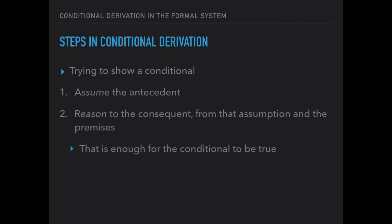And if we can do that — if we can reason from the antecedent to the consequent — then we know that if the premises are true, then so is the conclusion. In particular, so is this conditional. If the premises are true and we can reason from the antecedent to the consequent, that means if the premises are true, then the conditional is true, and therefore we infer the conditional.